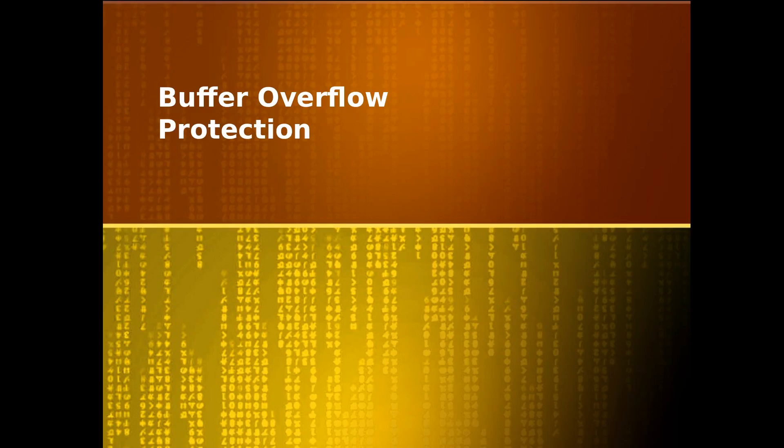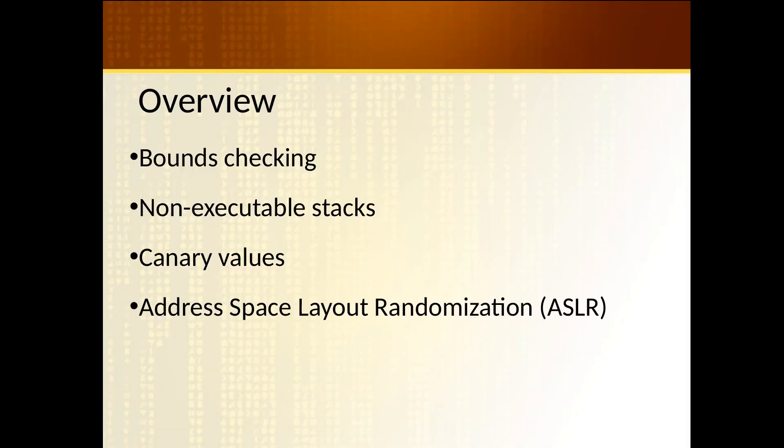Now that we've looked at a couple of memory corruption vulnerabilities and exploits — overflowing buffers, jumping to local functions, injecting shellcode — it's a good time to talk about some of the protections for memory corruption before we look at a few more issues. We're going to look at bounds checking, non-executable stacks, canary values, and ASLR, or address space layout randomization.